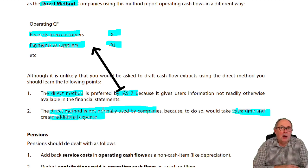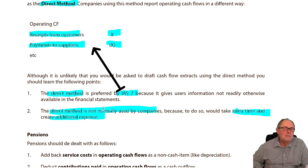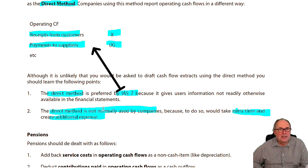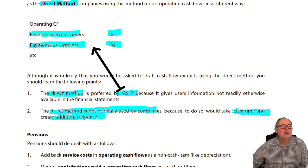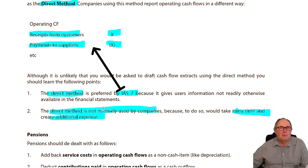The scenario I see is in an ethics question where the director will get the rule the wrong way round and say: we use the indirect method because the standard prefers it. And you must say no, that's not true. Then you can book them for professional competence and due care, or lack of it.